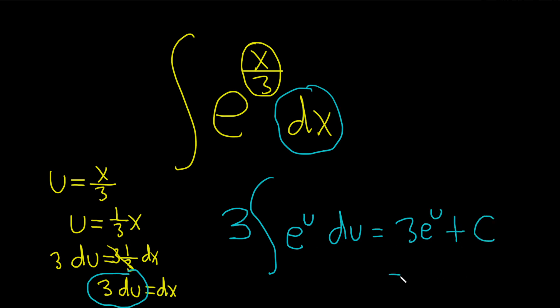And then u is x over 3. This is 3 e to the x over 3 plus our constant of integration, capital C.